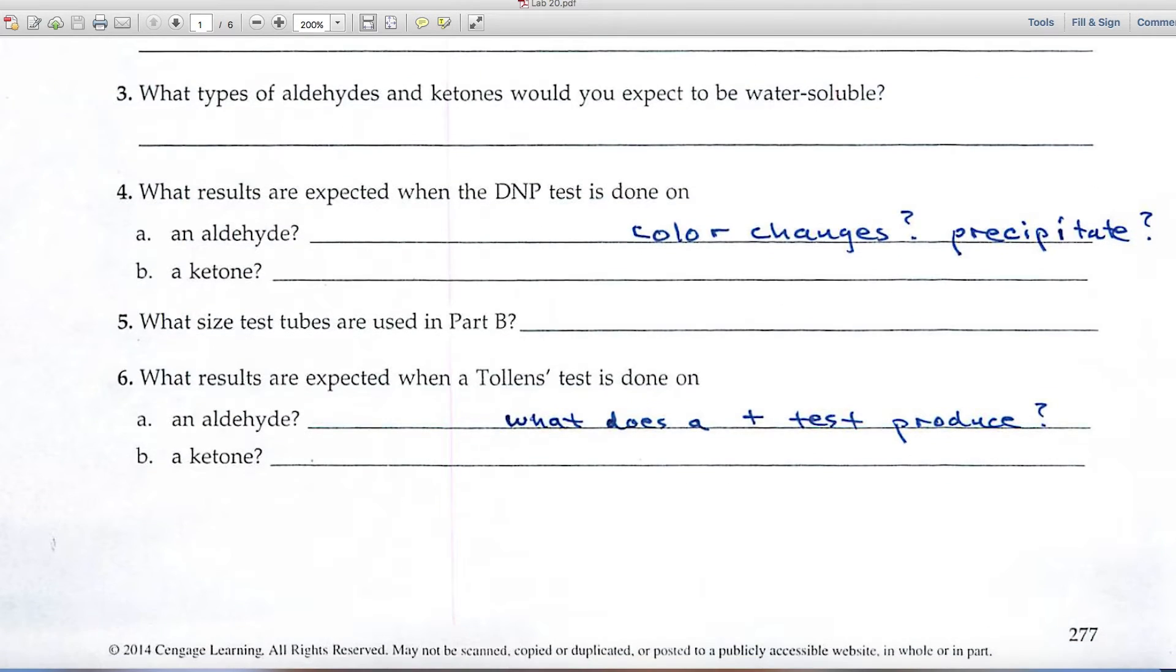And number six, what results are expected when a positive Tollens test is done on an aldehyde and ketone. You'll want to state what a positive test is, what you would expect.